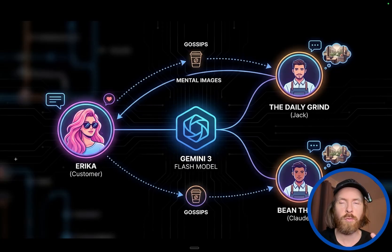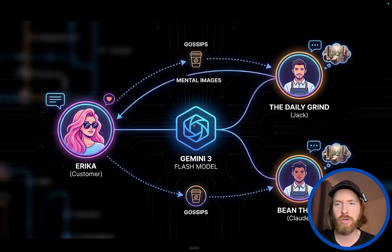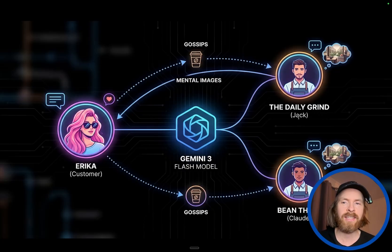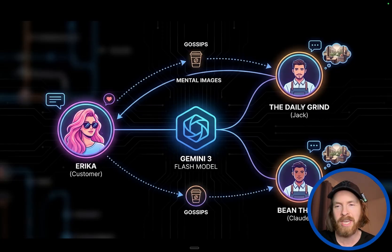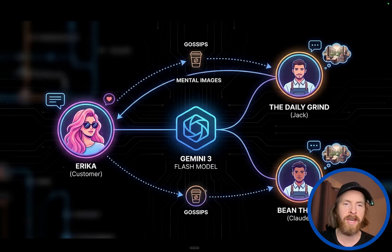This is a smaller prototype version of the simulation. To keep it short: we have three agents, all running on Gemini 3. One is Jack, who works at the Daily Grind — a coffee shop. We have Claude, who works at Been There, and we have Erika, who is the customer of both coffee shops. She can talk to both agents, but Jack and Claude cannot talk to each other because they are in different locations. She's a bit of a gossip, so she spills information from Claude to Jack, and they're both kind of interested in her.